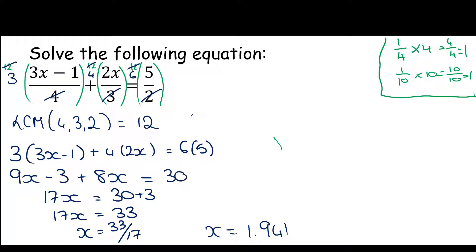So let's go through this. The first thing we need to do is multiply out the brackets. We have 2 times (x + 3), so we'll get 2x + 6 = 18 − 5x.